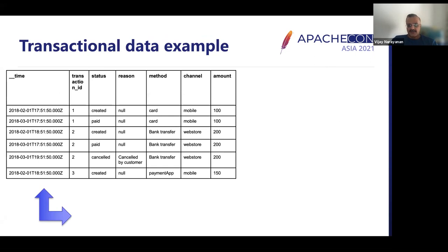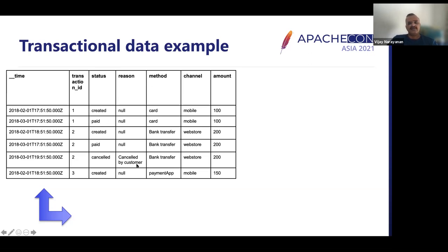Here is an example of transactional data from an online payments use case, where data is coming in over time. Each record has a transaction ID which is essentially the primary key. All the other columns go through a number of changes — for example, status can be pre-created, paid, and then cancelled, when a user makes a payment and decides to return what they purchased. There can be a reason for cancelling, methods of payment, a channel of payment, and the amount. This is typical transactional data in an online retail finance situation.